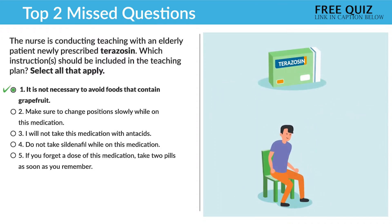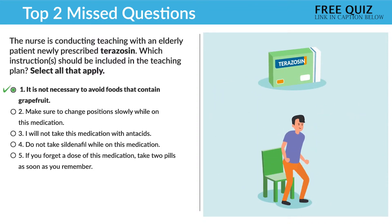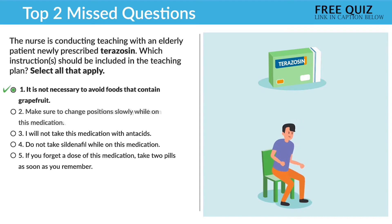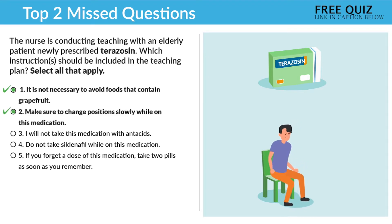Option two: Make sure to change position slowly while on this medication. Yes, this is also correct. With terazosin, we have slow position changes to prevent orthostatic hypotension.